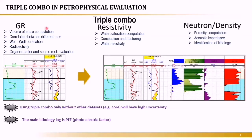The triple combo consists of gamma ray, resistivity, and neutron-density. The gamma ray is important because it provides the volume of shale. It can be used for correlation between different runs — for example, the first run is the triple combo and the second run is the borehole image. You do a depth shift between both runs to align the image to the triple combo. Gamma ray is also used for well-to-well correlation.